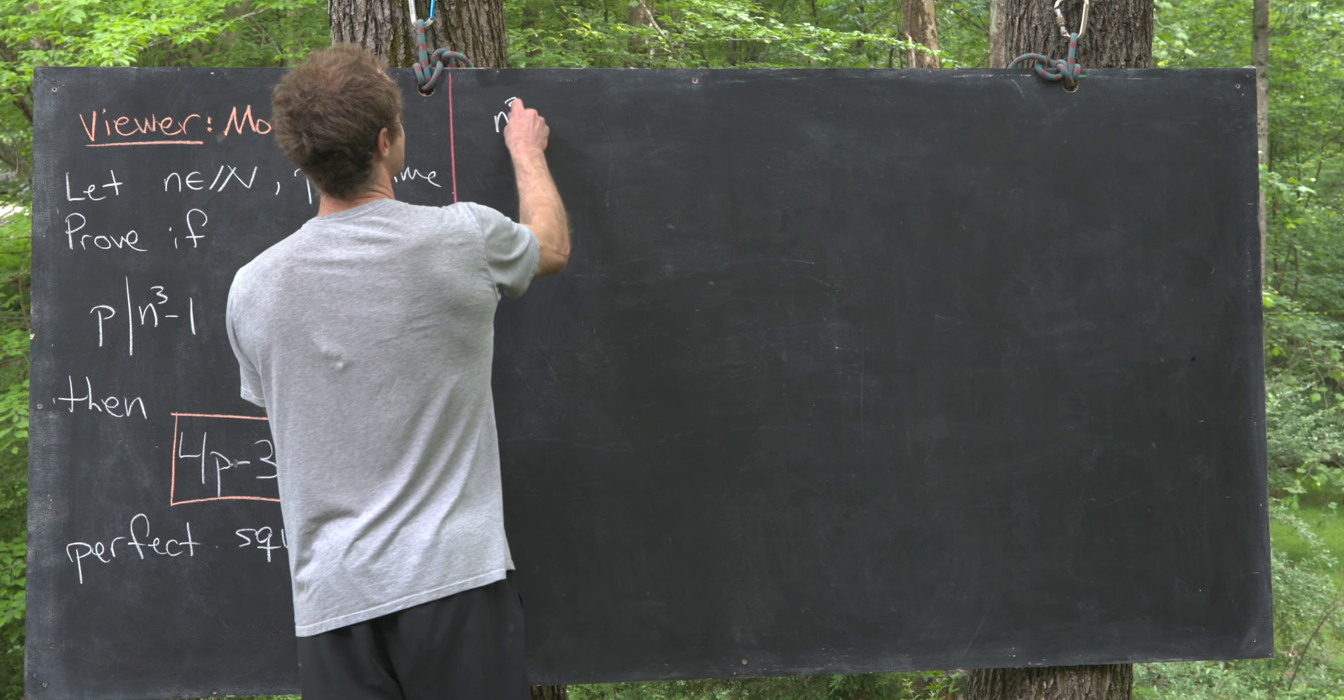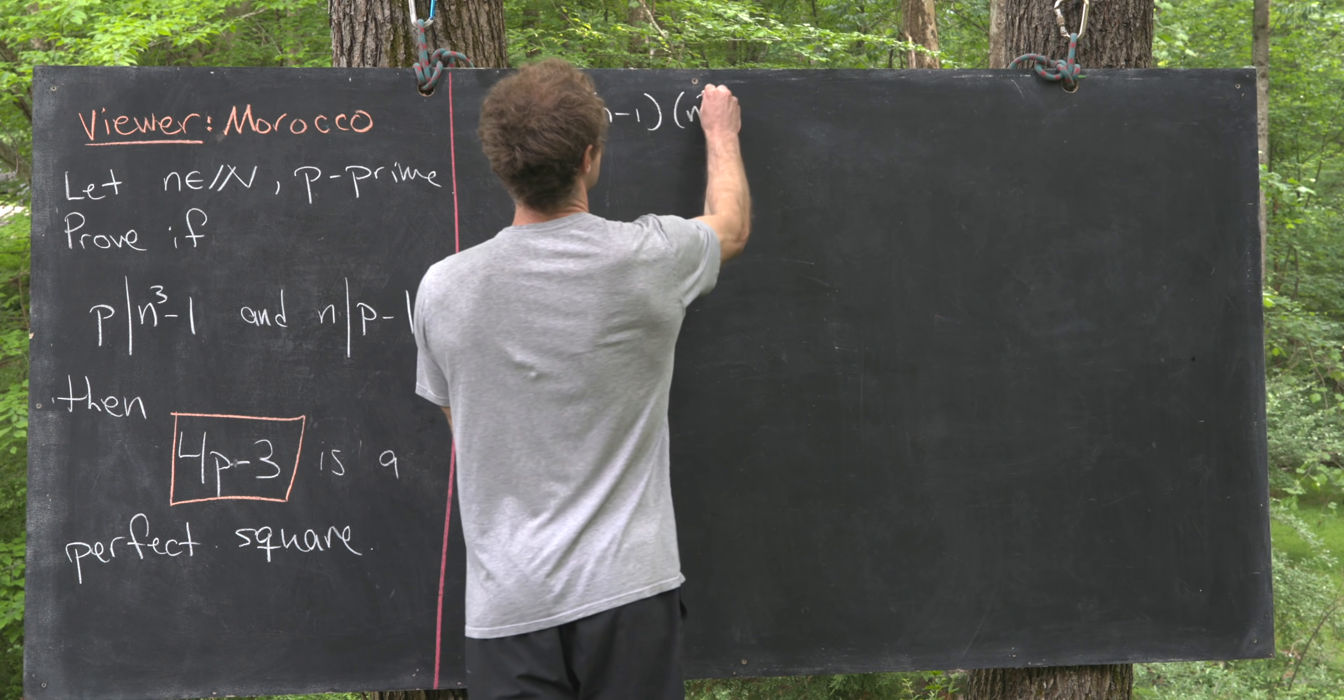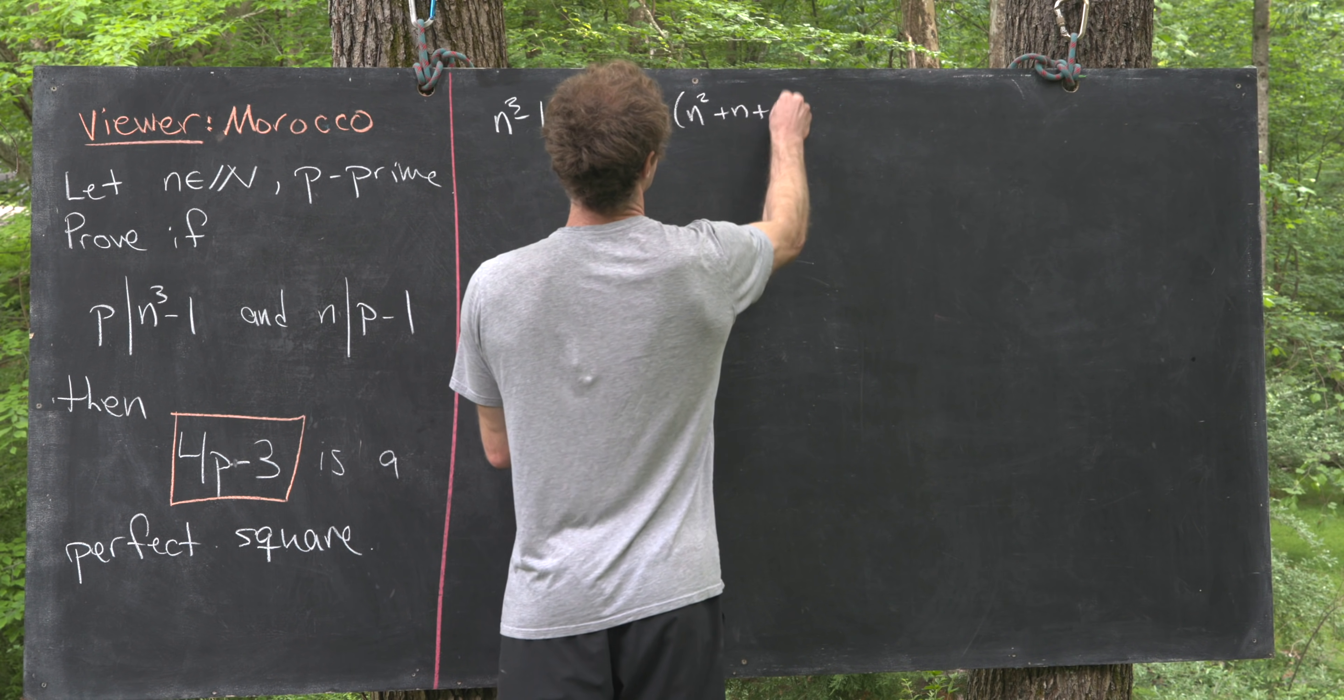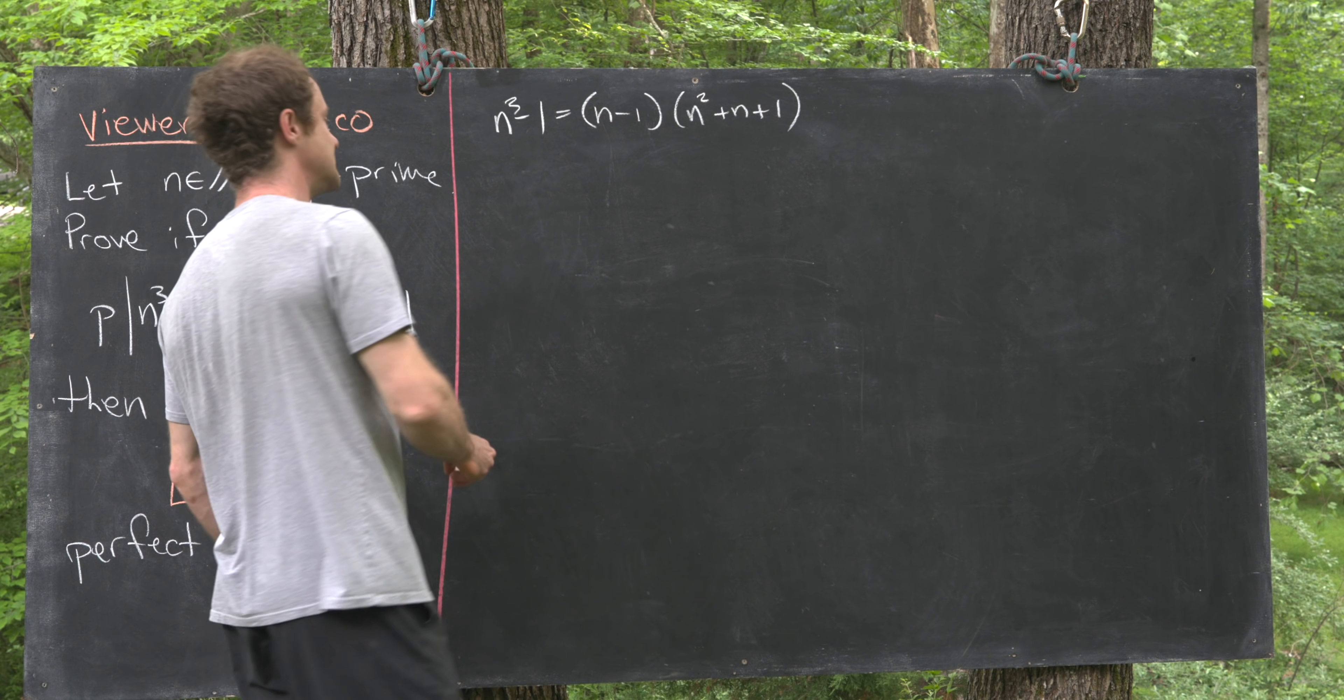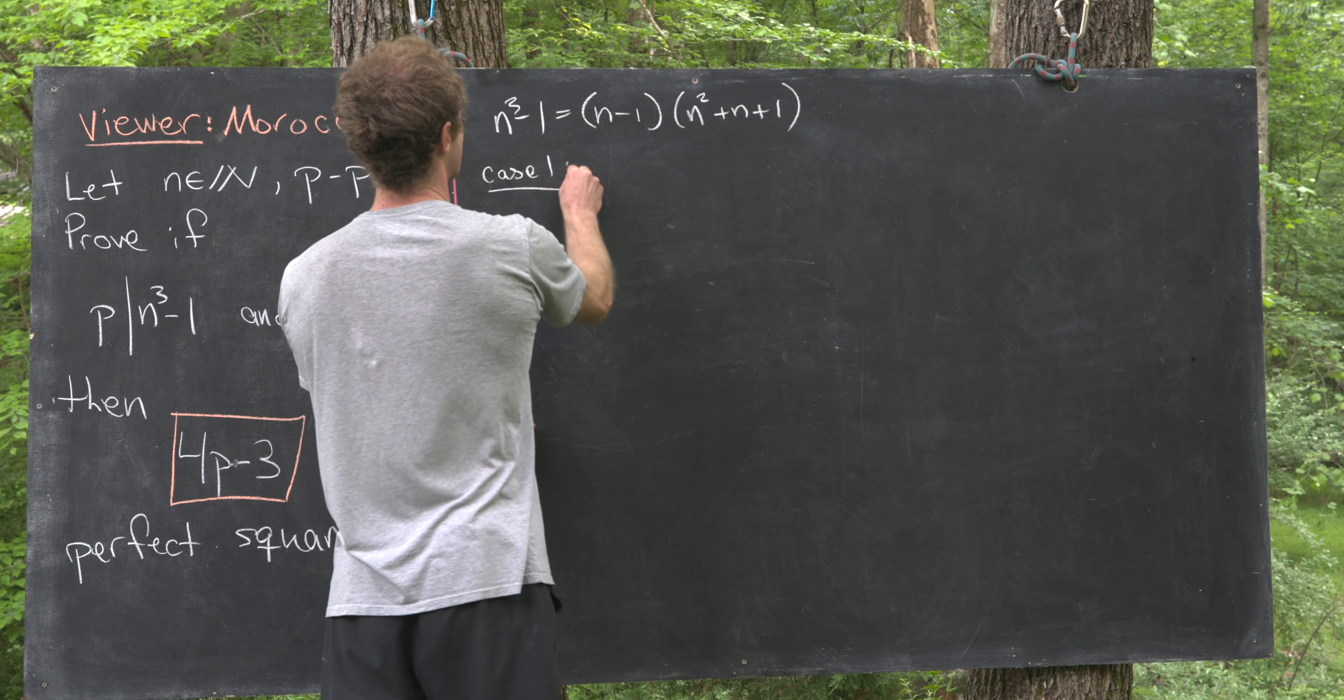Let's factorize n³-1 as (n-1)(n²+n+1). So that means our divisibility condition tells us that we've got these two cases.